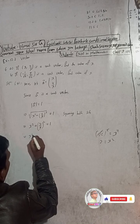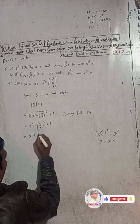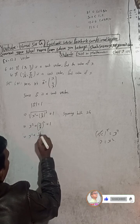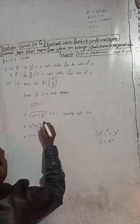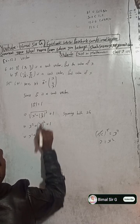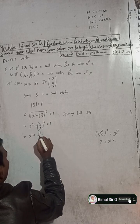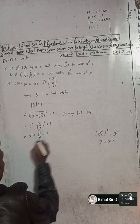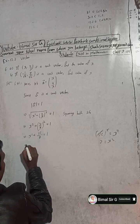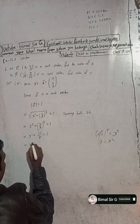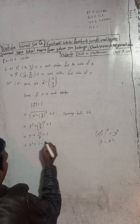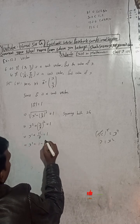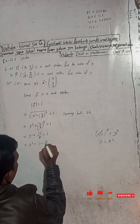So we get x squared plus 16/81 equals 1, since 4 squared is 16 and 9 squared is 81. Therefore, x squared is equal to 1 minus 16 by 81.